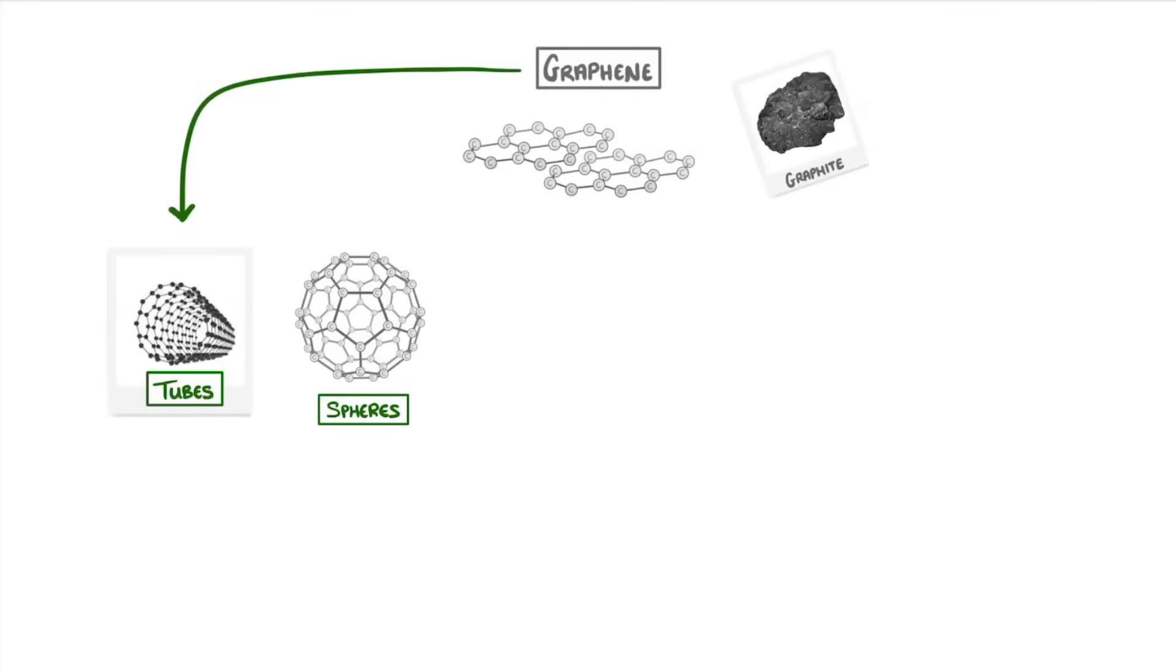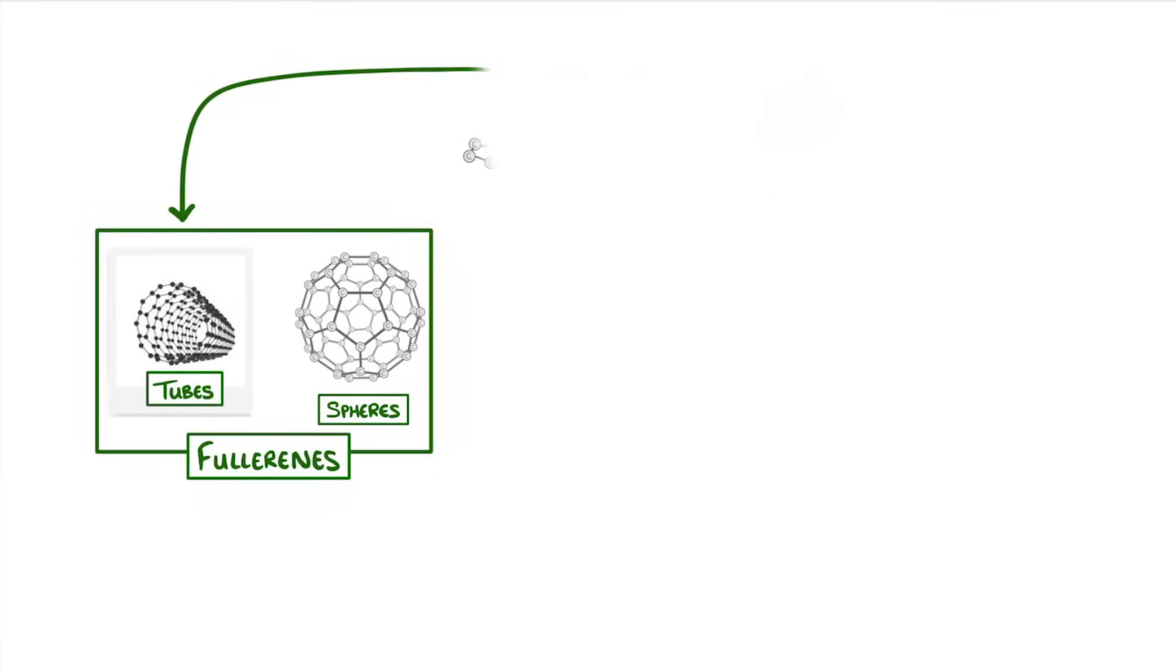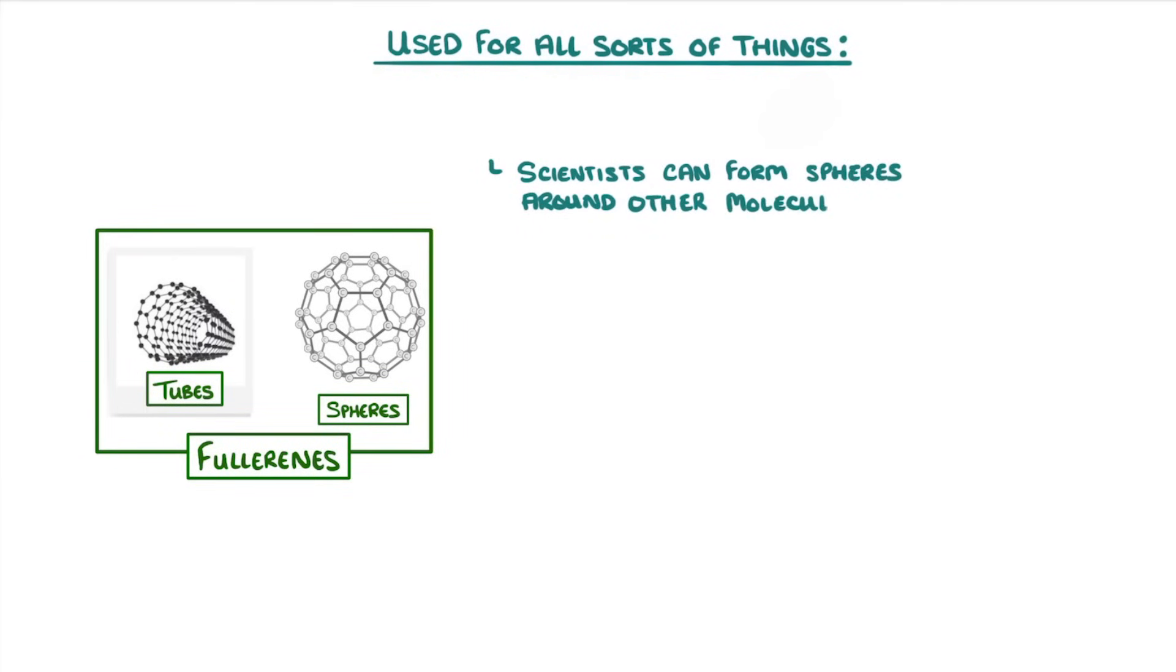And these tiny tubes and spheres, which we call fullerenes, can be used for all sorts of things. For example, scientists are able to form the spheres around other molecules, such as drugs, so that it acts like a cage and can be used to deliver the drugs to certain areas of the body.